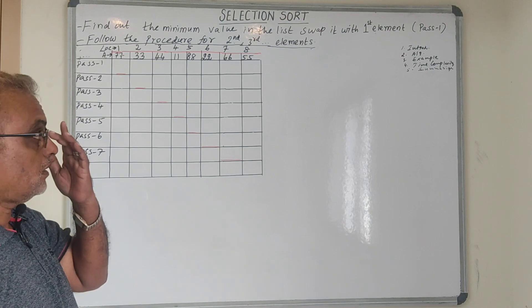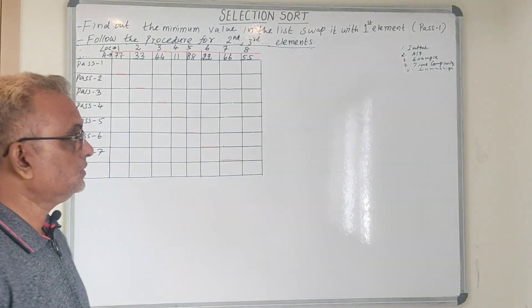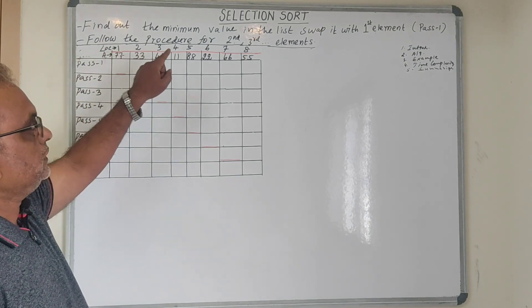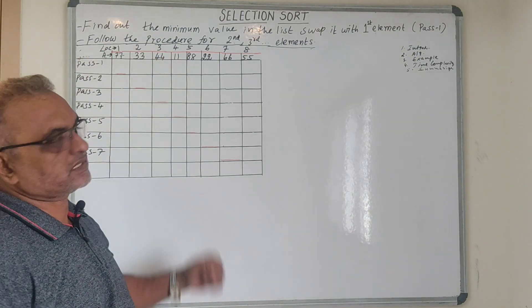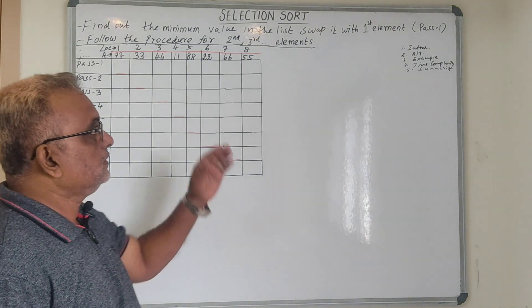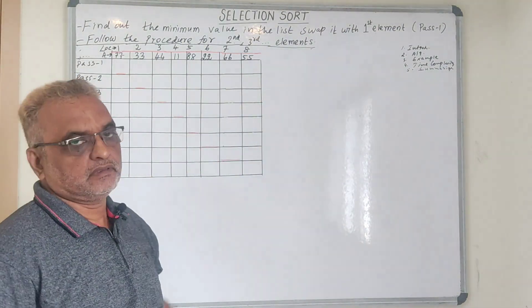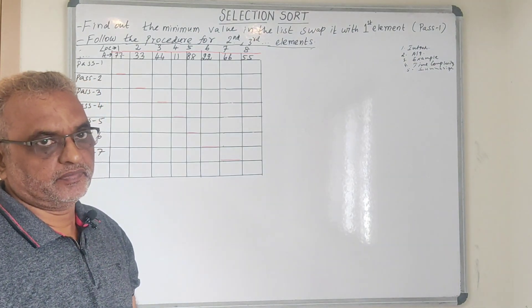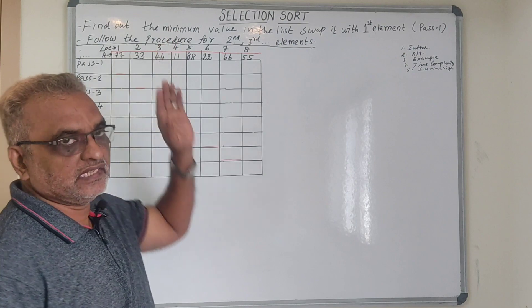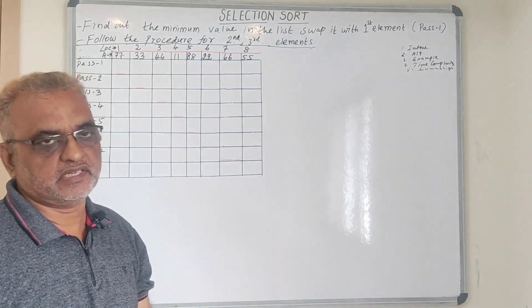In this algorithm, we are going to perform two different operations. One is: find out the minimum value in the list — that is the first operation. The second operation: swap it with the first element. The same procedure we are going to do for the second, third, etc., up to n elements.